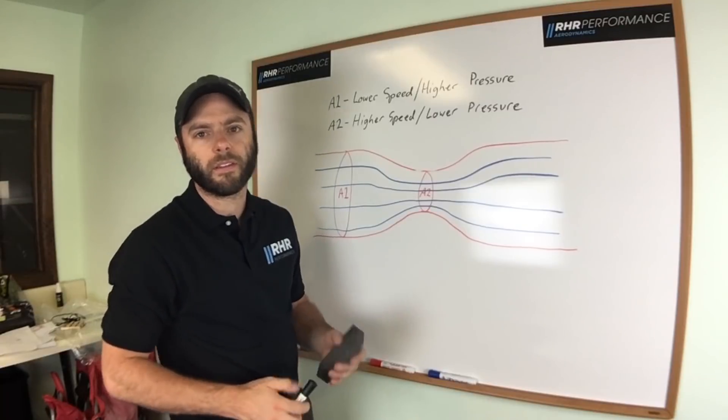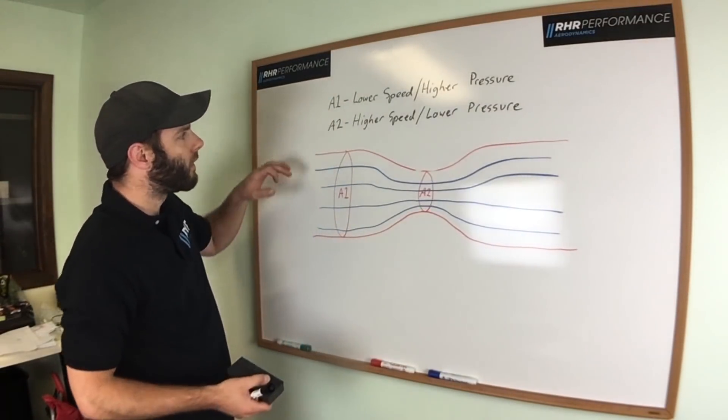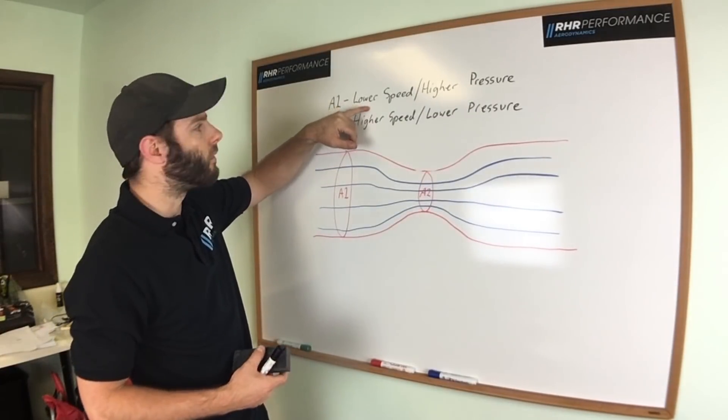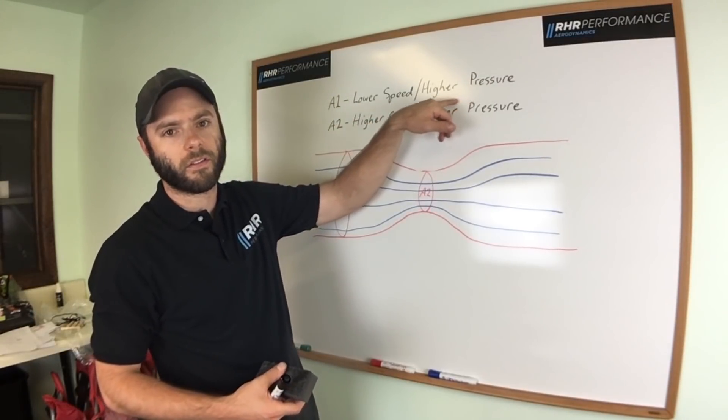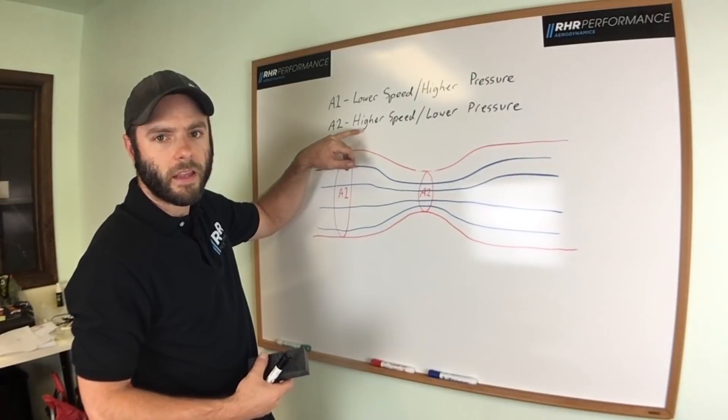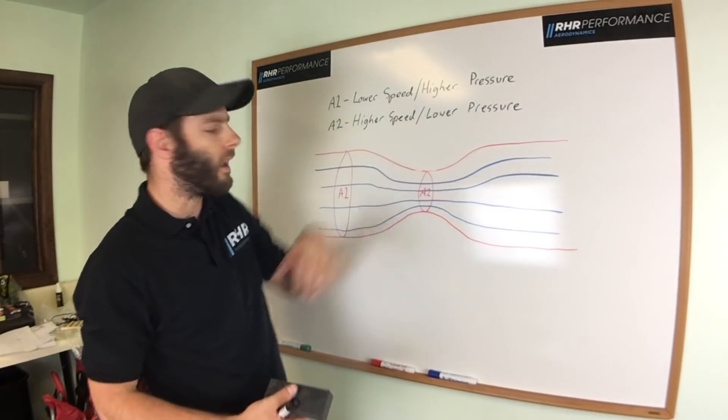So first thing we're going to have to do is get a little familiar with Bernoulli's principle. Bernoulli's principle states that as air is at a lower speed or lower velocity across the surface, the pressure increases, you get higher pressure. As air velocity increases, you get a lower pressure across the area.